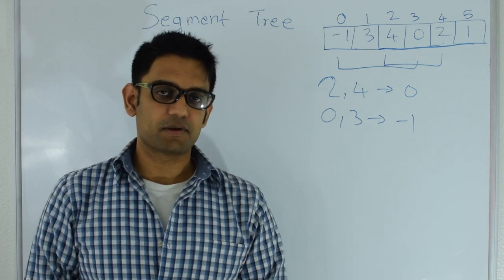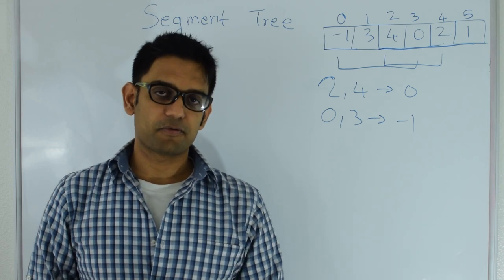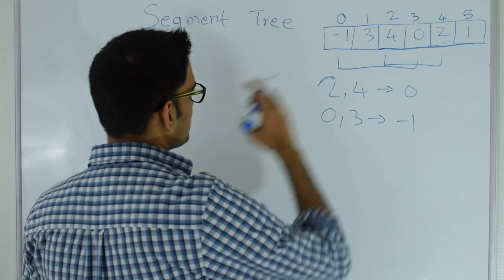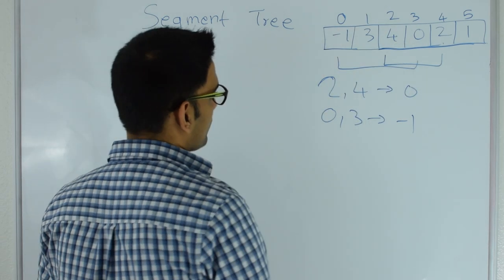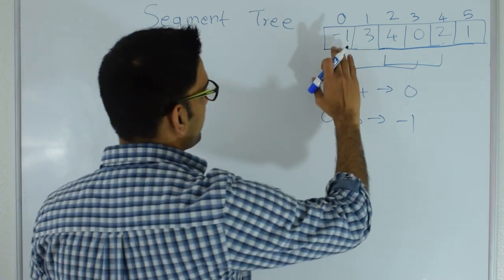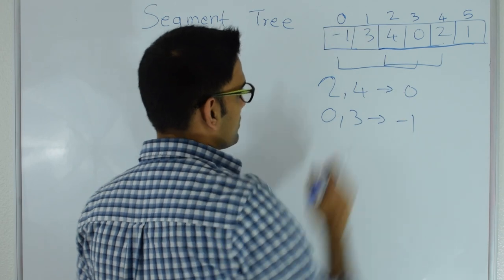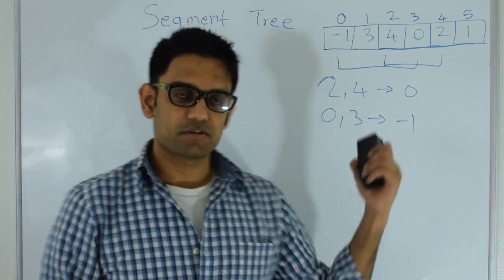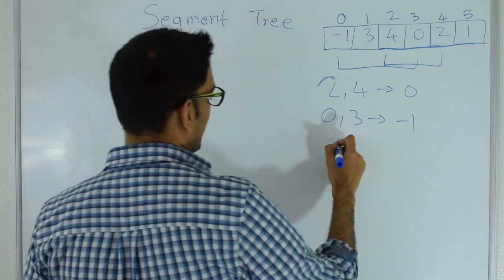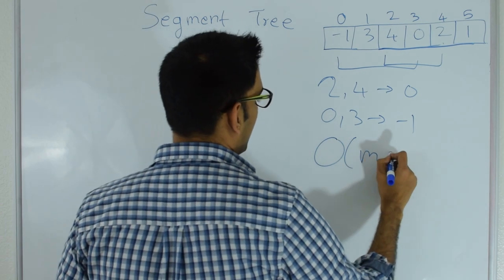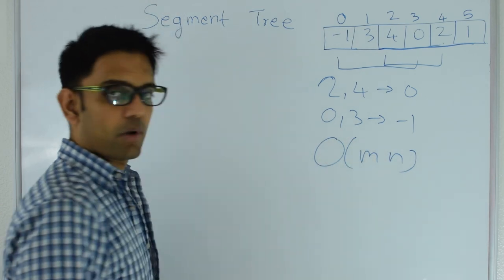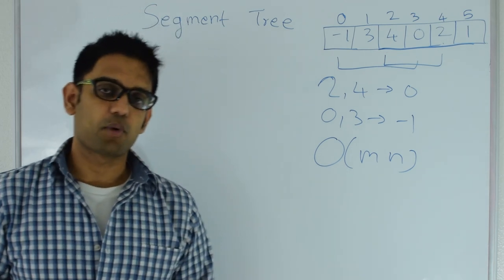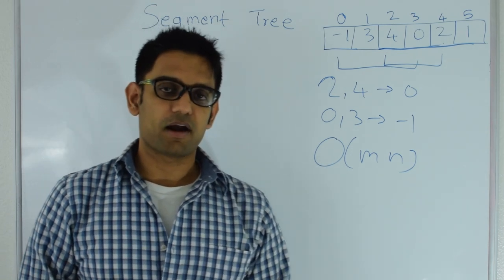Let's see if we did not use Segment Tree, what are the other alternative ways to answer these questions. I could just traverse through this array and return the minimum from 0 to 3 as minus 1, and that works fine. But what if there are millions of queries? The total time for that would be M×N, where M is the number of queries and N is the size of the array, and this might not scale well if M and N are really large numbers.